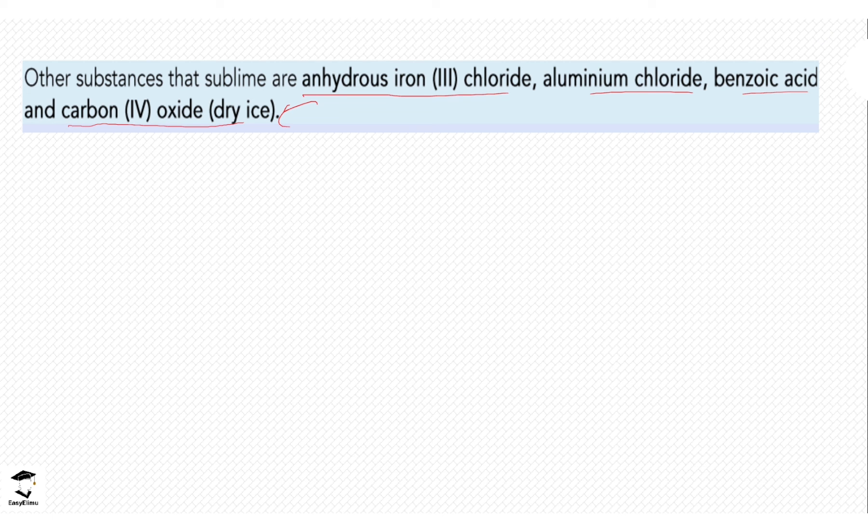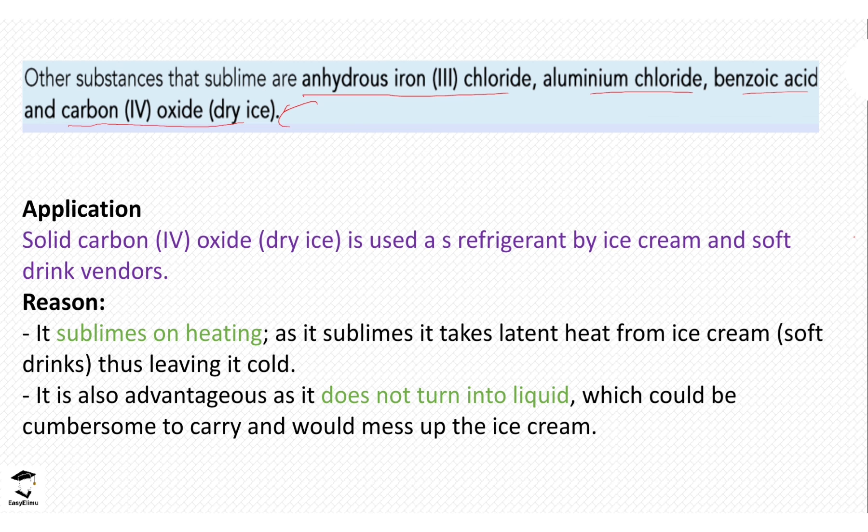Next, you're going to look at one key application of this process, just like we looked at the application of use of a magnet. So for sublimation, one of the applications is in dry ice. The dry ice or carbon-4 oxide is used as a refrigerant. You're going to see the ice cream vendors that usually move around with some boxes. Inside those boxes, they have carbon-4 oxide, which is dry ice.